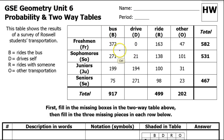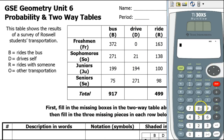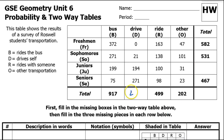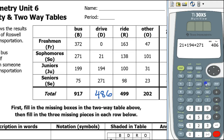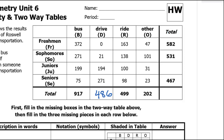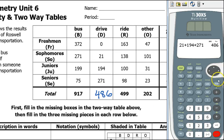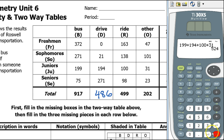For example, if I add up these four numbers, I'm going to get 917. If I add up these four numbers in the D column, I'm going to have 21 plus 194 plus 271 — that's 486. Similarly, if I add up the numbers across the junior row, I should get the total over here. That's 199 plus 194 plus 100 plus 31, which gives us 524.